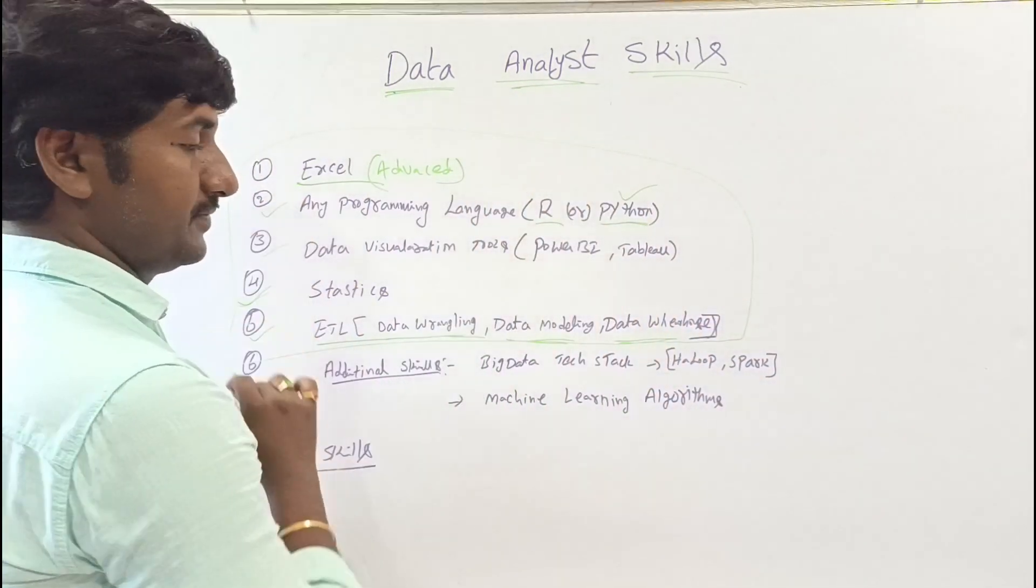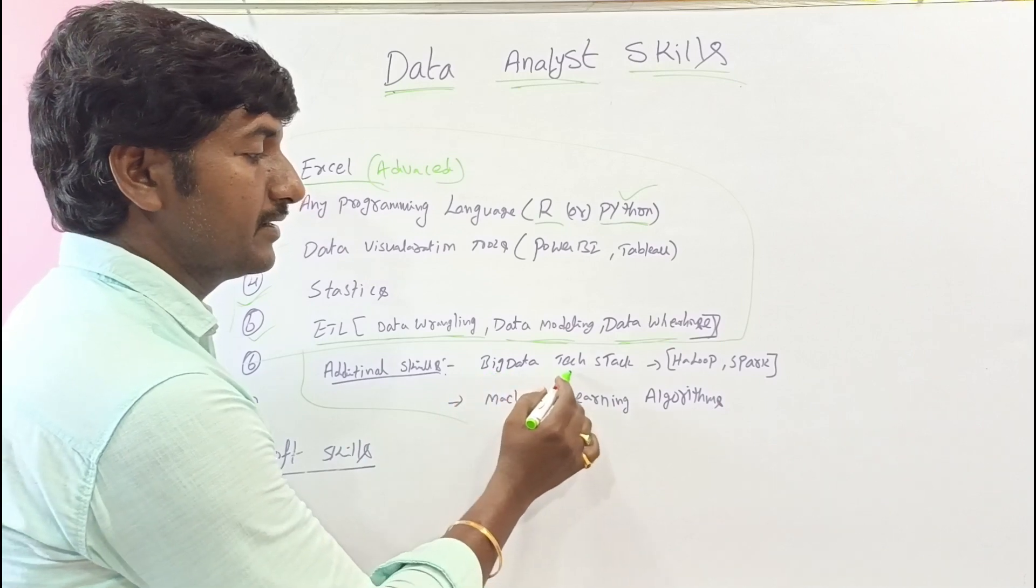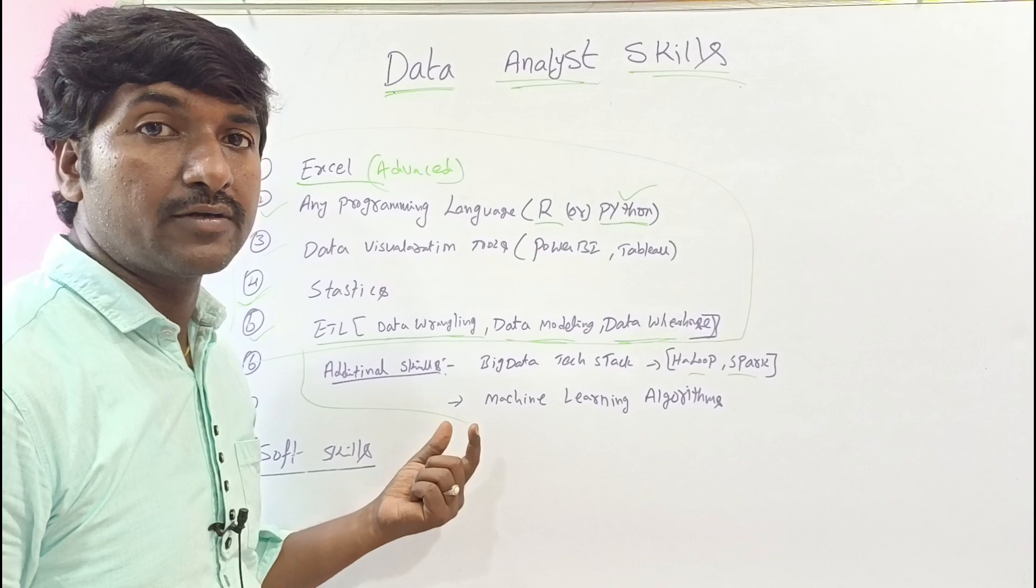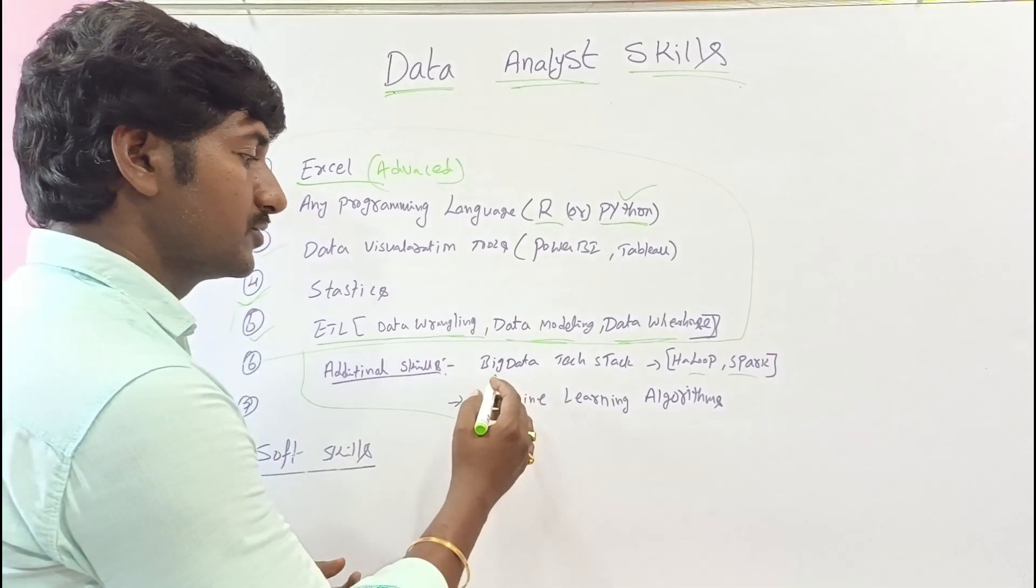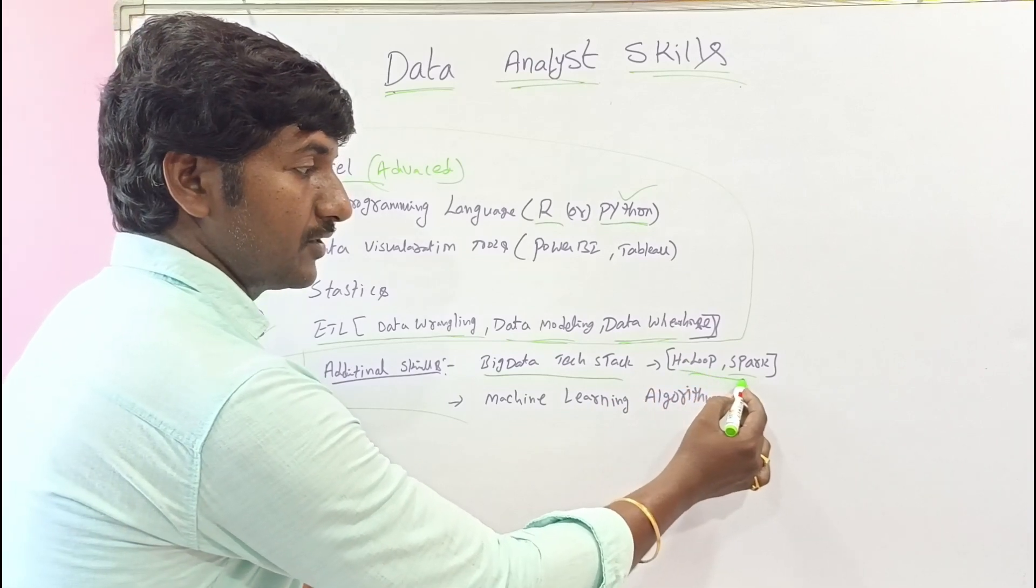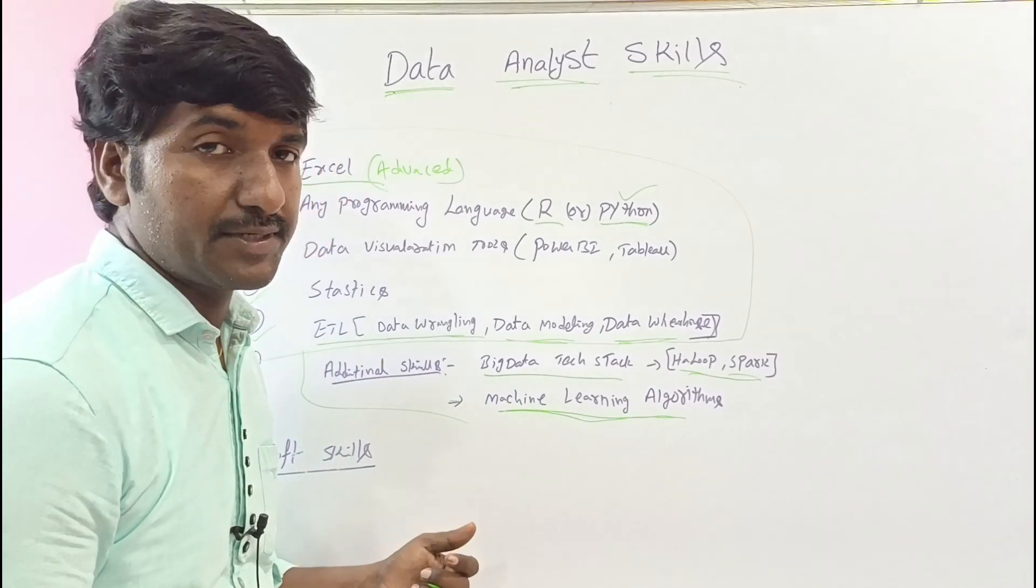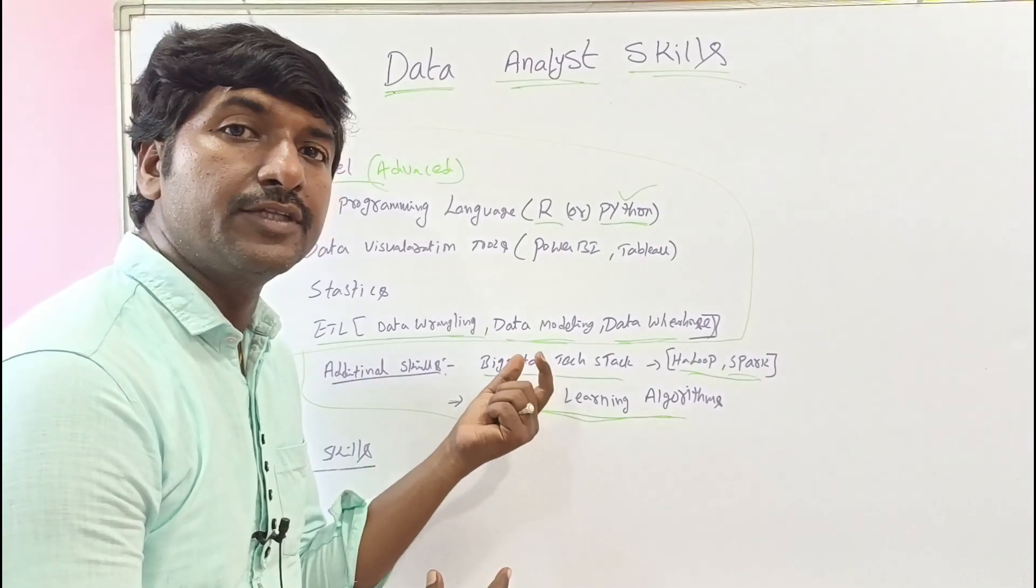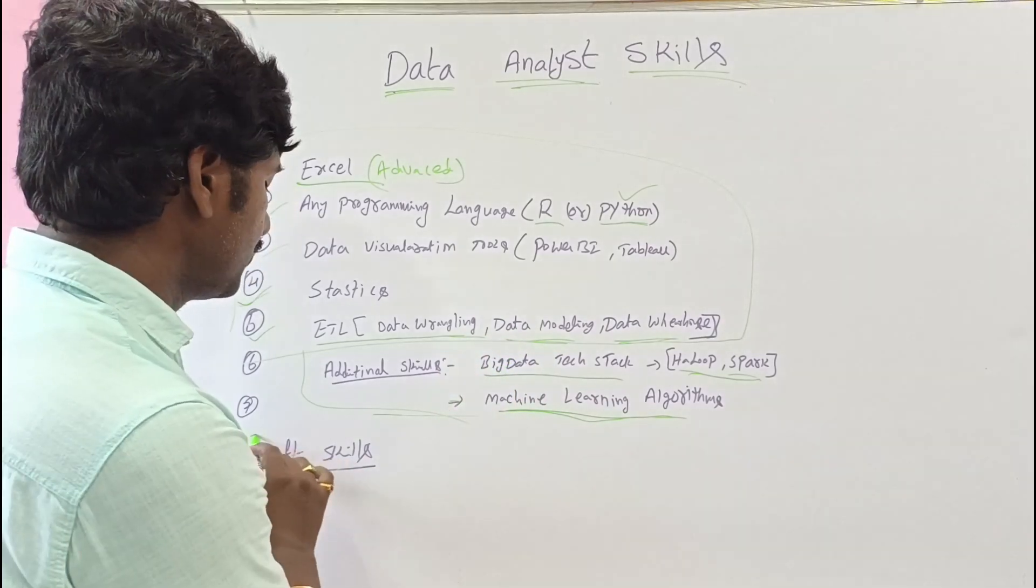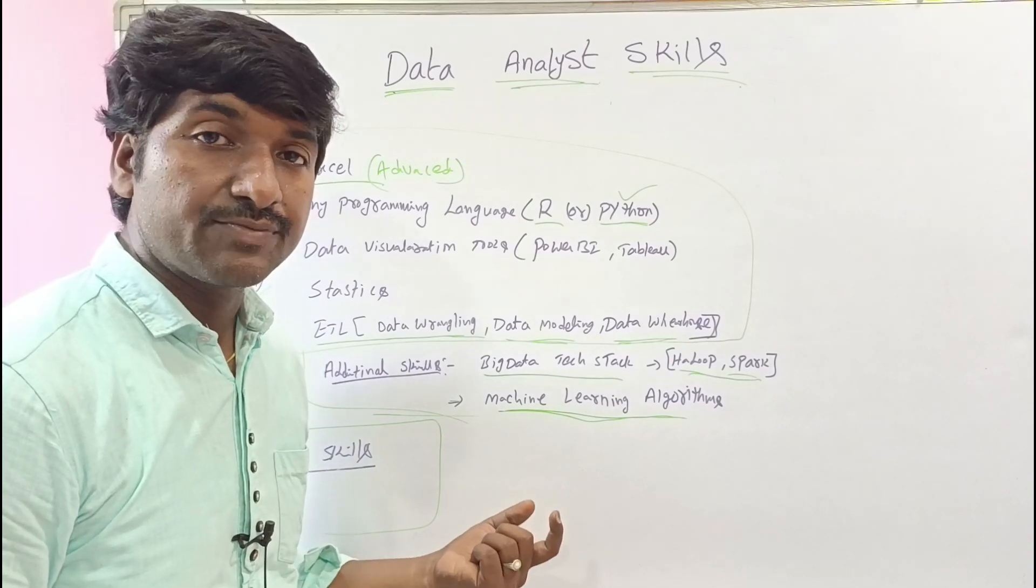The secondary and additional skills include big data technology tools like Hadoop and Spark. Some companies ask about these concepts in interviews based on their project requirements. Along with primary and technical skills, you should have soft skills as well. You must be good at communication skills, both verbal and written, and must be a problem solver with good analytical thinking. You must also have good domain experience.